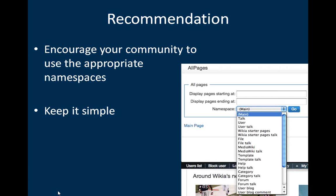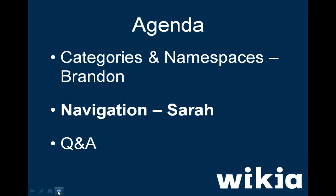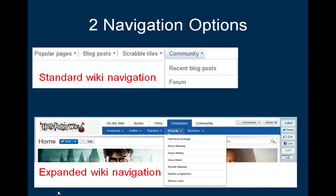Thanks, Brandon — that was a lot of information and a lot of good tips for categories and namespaces. And now I'm going to talk about Wiki navigation. As mentioned in the beginning, the Wiki navigation is found on the top of every page on your Wiki. There are currently two available types of navigation on Wikia: the standard Wiki navigation and the expanded Wiki navigation. If you don't have it yet, you can activate it in Wikia Labs, which you can find in the admin dashboard.